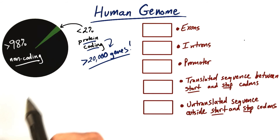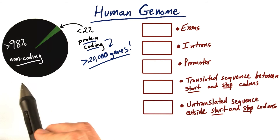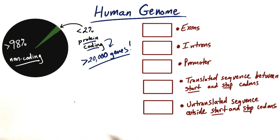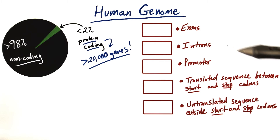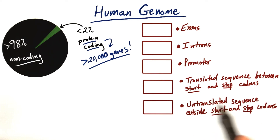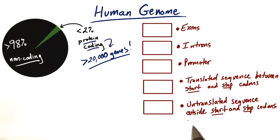To make sure that your understanding of non-coding and protein-coding DNA sequences is clear, I've listed 5 different types of sequence that we could find in a genome: exons, introns, promoter regions, translated sequence between start and stop codons, and untranslated sequence that would be transcribed but outside start and stop codons.